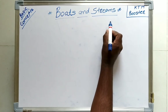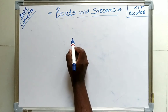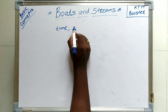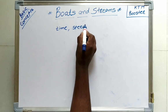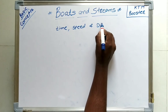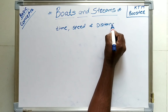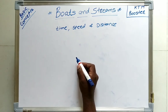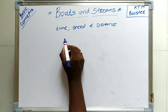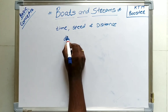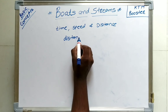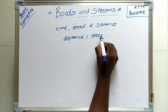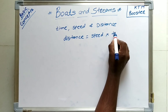Boats and streams problems are dependent on time, speed and distance. The basic equation of time, speed and distance is given by: distance is equal to speed into time.